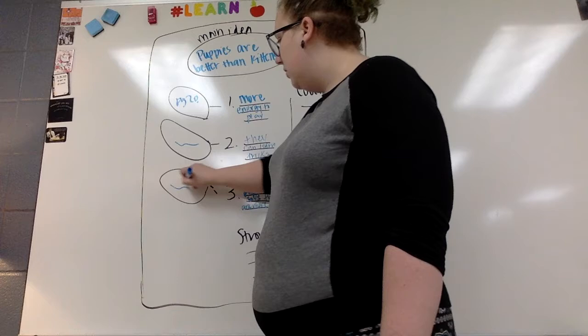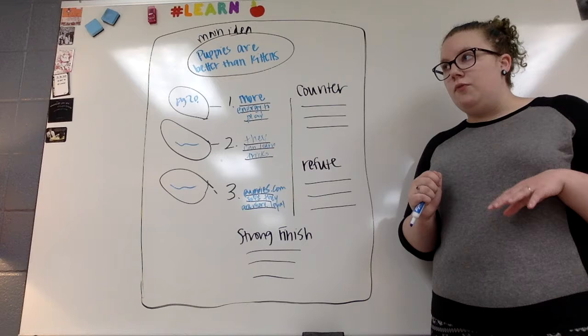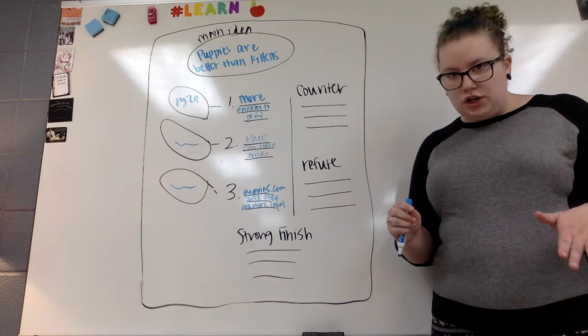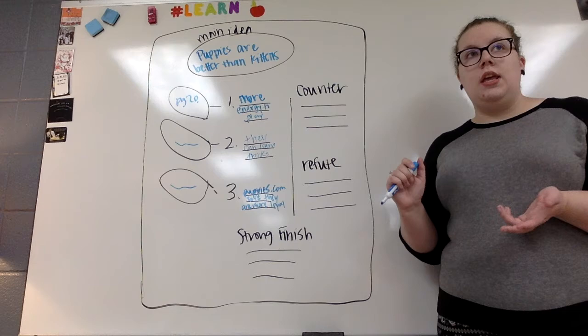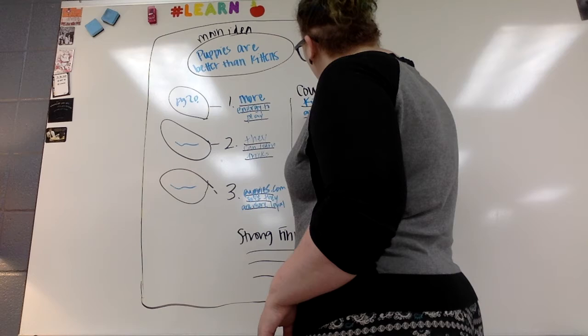Next, you're going to come over to the other side of this line. This is where we're going to look at our counter-argument. The counter-argument is when you're going to address something that the other side is probably going to argue and shut it down before they even get a chance to argue it. So I'm going to think, if I was on kitten's side, what's something that maybe they'll say? I could say that they are cuter. So you could argue that kittens are cuter.